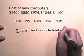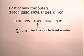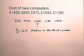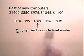So the median is the third number, which is $1,045, and you can readily see that $1,045 is the number which is exactly in the middle of this list of numbers. So the median cost of new computers is $1,045.